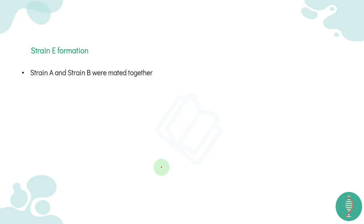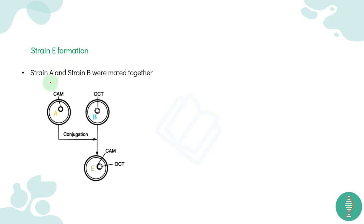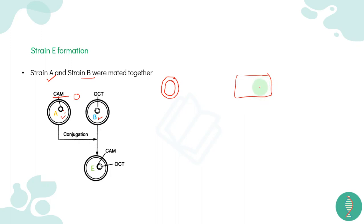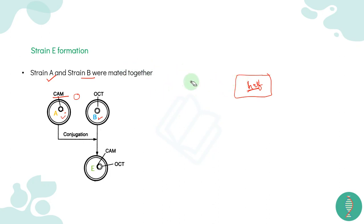So we have strains E, F, and G — don't be confused. We have A, B, C, D, and now we will do conjugation. Strain A, which has the CAM plasmid, is conjugated with strain B, which has the OCT plasmid. In conjugation, a bridge forms between bacteria and one plasmid strand transfers into the other cell. So there is a possibility that half or one full plasmid goes into it.